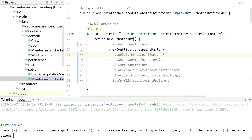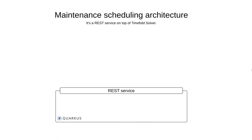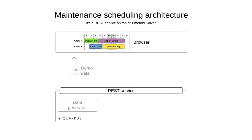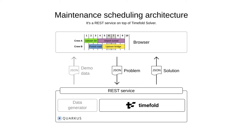Before we jump into the code, let me explain the model in more detail. Architecture-wise, this is a Quarkus application — you can do this in Spring Boot too. We generate a dataset and send it to the UI, which shows it. When we click the solve button, it sends the problem back to our backend, which solves it and sends the solution back to the frontend. We solve it with TimeFold.